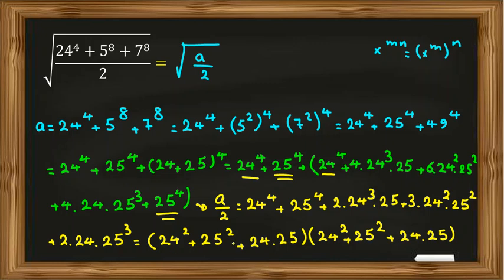So a over 2 is this number squared, so I can write it as this number. 24 squared is 576, 25 squared is 625, 24 times 25 is 600.